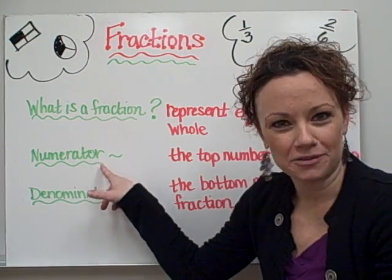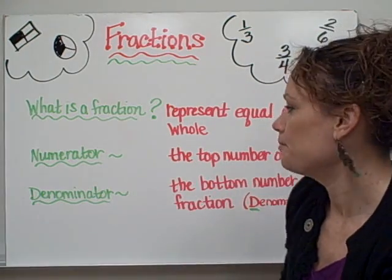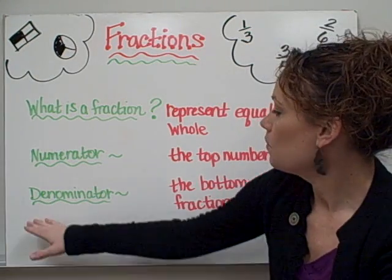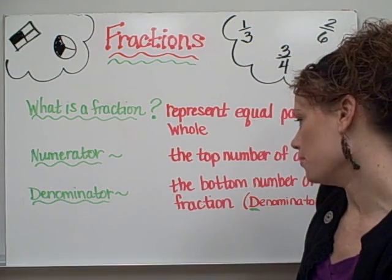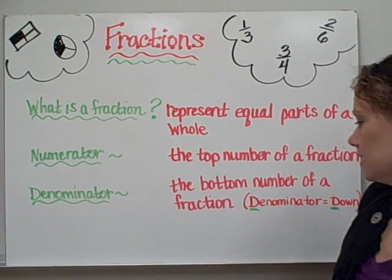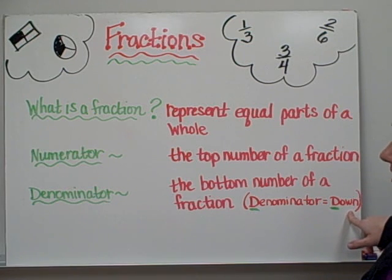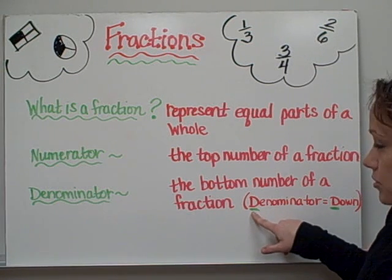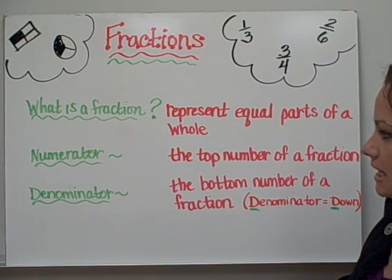What is a numerator? A numerator, just as a review, is the top number of your fraction. What is a denominator? The denominator is the bottom number of your fraction. I like to remember denominator as being the number that goes down, because denominator starts with D, just like down starts with D.